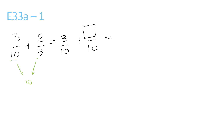So 3 over 10 just stays the same because it's already over 10. But 2 over 5, we have to change it to 4 over 10. This is because 5 times 2 is 10, so we have to do 2 times 2, which is 4. Now we just add the top numbers: 3 plus 4 is 7 over 10.